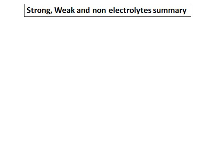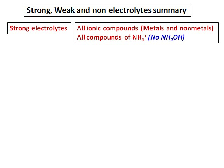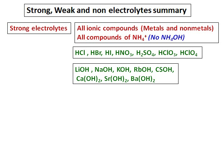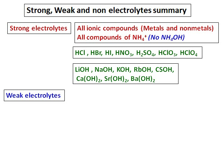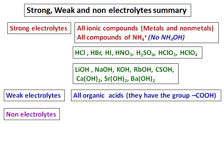Let's sum up strong, weak, and non-electrolytes. Strong electrolytes include all ionic compounds, all compounds of ammonium ions, the seven strong acids, and the eight strong bases. Apart from all of these, compounds should be considered weak electrolytes. An example of a weak electrolyte is any organic acid — these will have a COOH group.